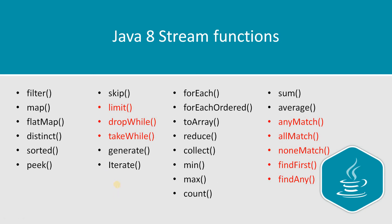We've categorized Java 8 stream functions into two categories: intermediate operations and terminal operations. Intermediate operations produce another stream as a result — for example, filter generates another stream. Terminal operations give you the final result, which could be an integer, a double, an array, or something else depending on your requirement.